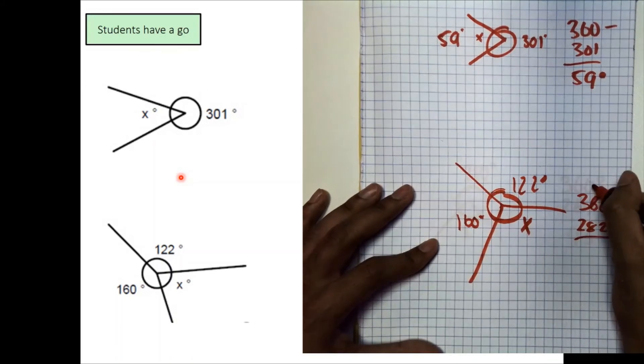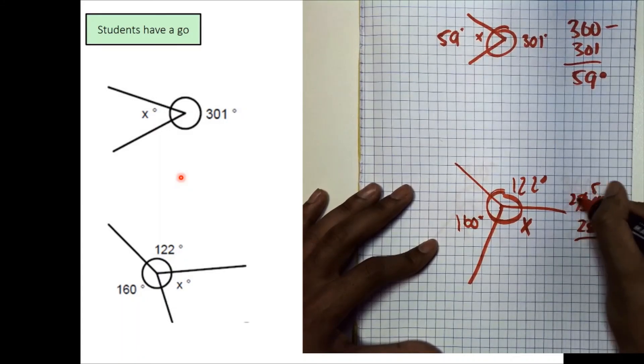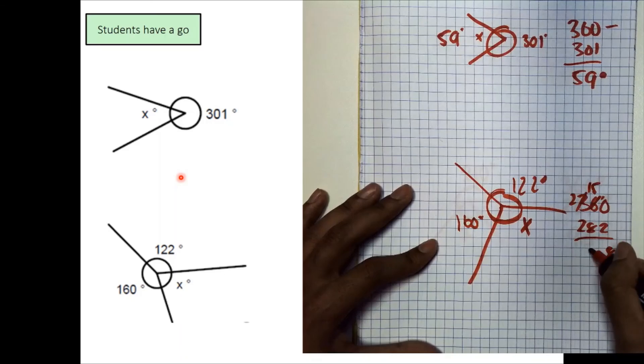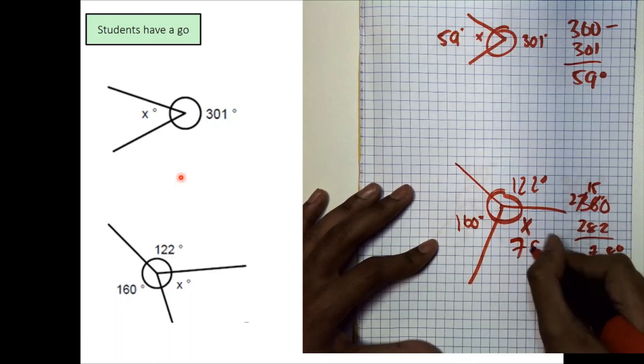Borrow one from here, add over here, 10 take away 2 is 8, borrow another one, make that 2, 15 take away 8 is 7, and then 2 take away 2 is nothing. And so our angle over here is 78 degrees.